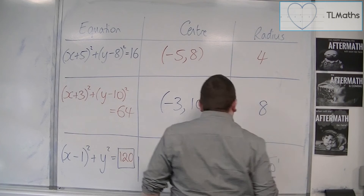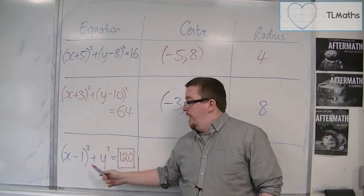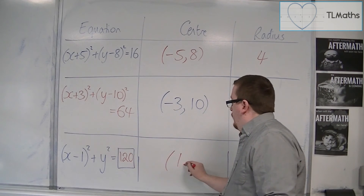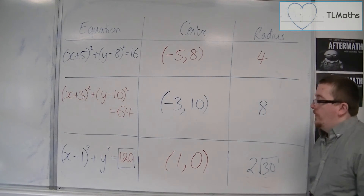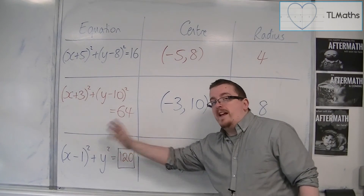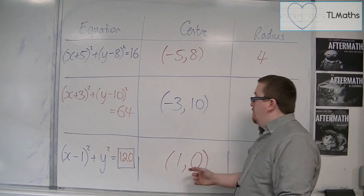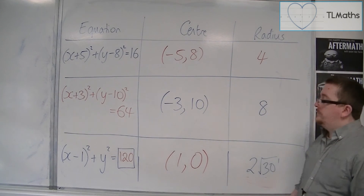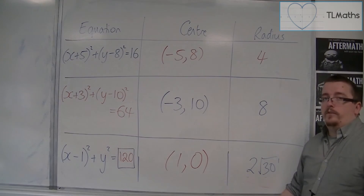And then finally, we have the centre, so we would have 1 and 0 — so (1, 0) is the centre of the circle. If you've just got a y squared there, or an x squared, that's identifying that it's going through 0 on either the x or y axis. And that's how we can fill in a table like this.